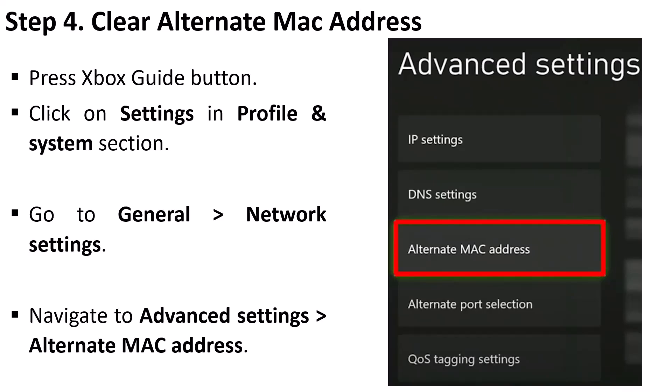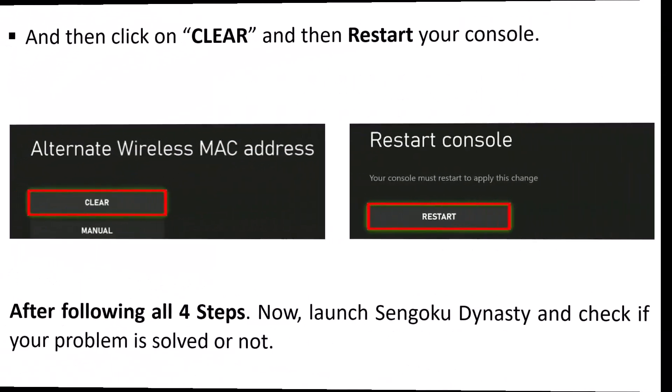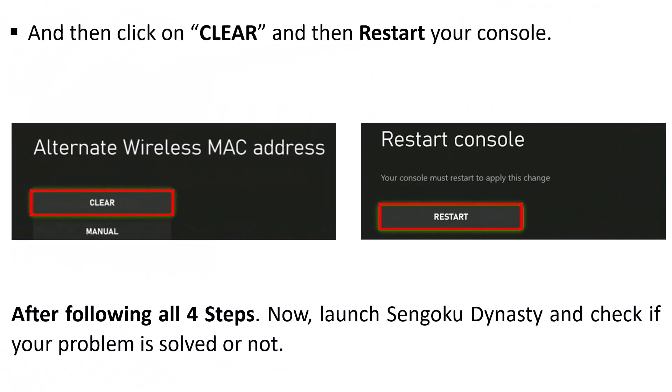Step four is to clear the alternate MAC address. Press the Xbox guide button, click on Settings in the Profile and System section, go to General, Network Settings, navigate to Advanced Settings, Alternate MAC Address, then click on Clear and restart your console. After following all four steps, launch the Sengoku Dynasty game and check if your problem is fixed or not.